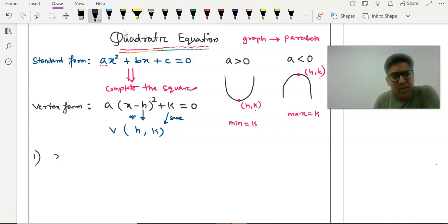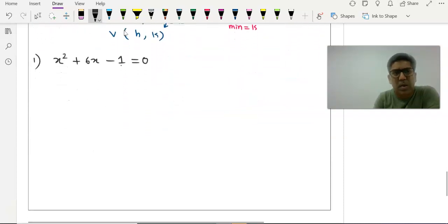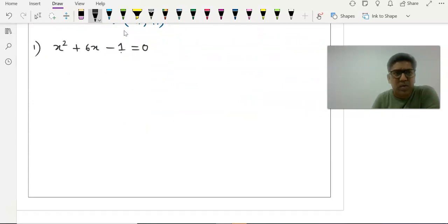Suppose the equation is x² + 6x - 1 = 0. We know that there are no factors of 1 that will give you plus 6. So we need to solve this either by completing the square or by formula. Since the coefficient of x² is 1, we will prefer to solve it by completing square method.